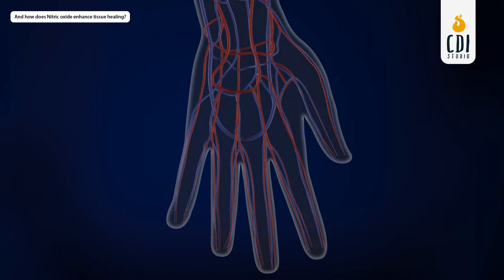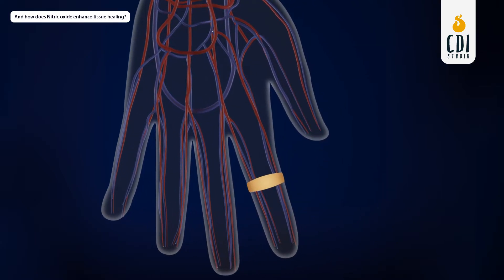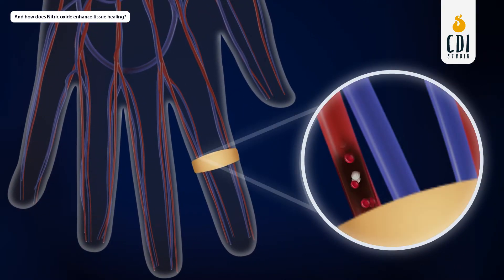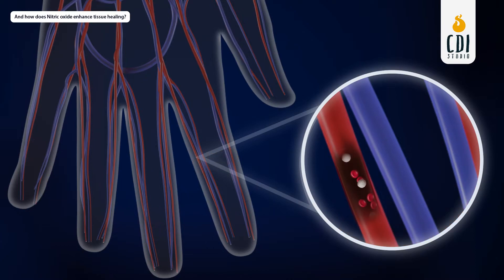Think of how painful your finger becomes if you wrap a rubber band around it. The rubber band cuts off blood flow, therefore depriving cells of oxygen. The pain recedes when the rubber band is removed.